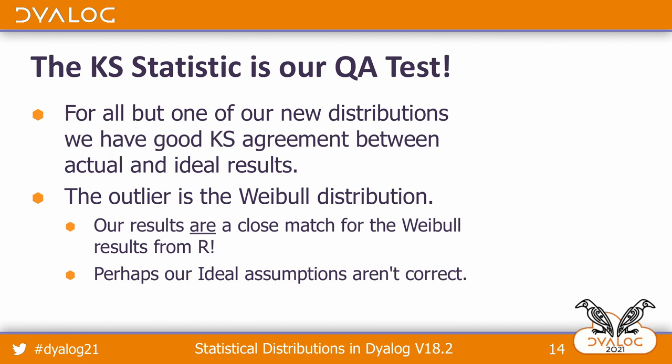The funny thing is, the results we got are a very close match for the results produced by the R programming environment. R has quite a good reputation and has been around for a while. So we have to be suspicious of the question: did R get it wrong? What I'll have to assume is our assumptions about what the ideal distribution should look like are not correct.